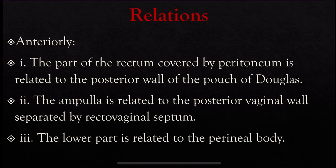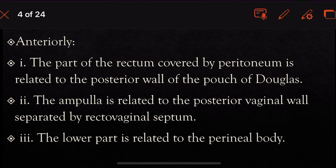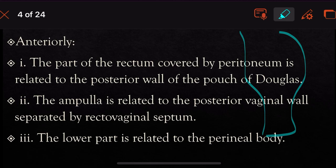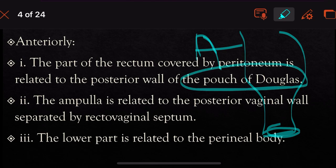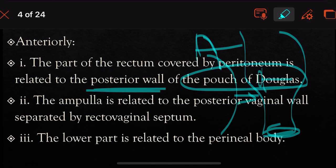Moving to the relations of the rectum — anteriorly, the rectum is covered by the peritoneum, which is related to the posterior wall of the pouch of Douglas. Anterior to the rectum, we have the pouch of Douglas, and the posterior wall of the pouch of Douglas is related to the anterior part of the rectum.